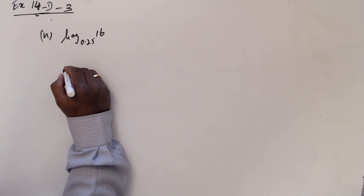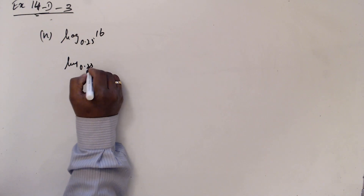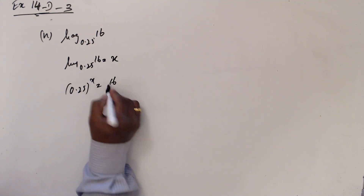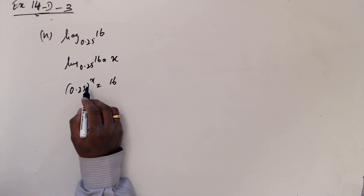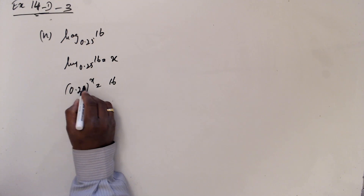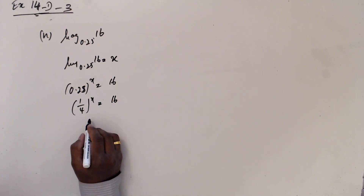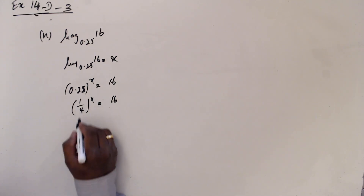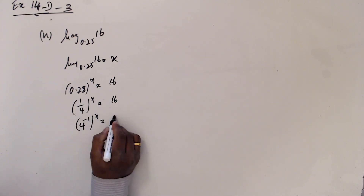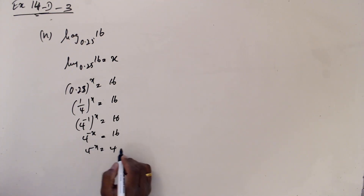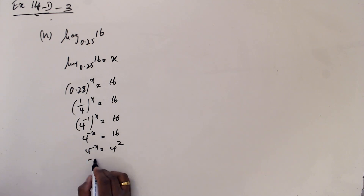So this one: take log base 0.25 of 16 equals x, so 0.25 to the power x equals 16. This is 1 over 4 to the power x equals 16, which means 4 to the power minus x equals 16. 4 to the minus x equals 4 squared. So minus x equals 2, x equals minus 2.